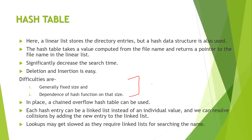If two keys map to the same location — meaning applying the hash function to both strings produces the same output — those strings are called synonyms. If we encounter a large number of synonyms in a document, we get a collision problem, which is a significant disadvantage.